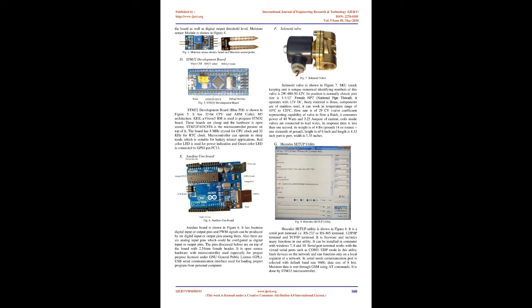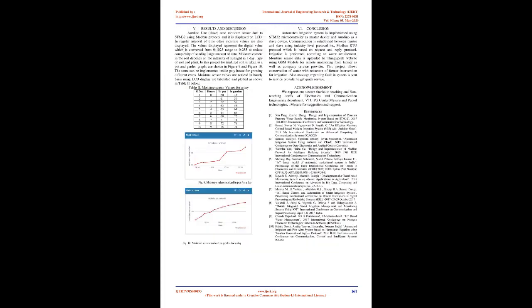The solenoid valve, shown in Figure 7, has SKU number 2W400-50-12V. Its position is normally closed, port size is 1-1/2 inch female NPT (national pipe thread), it operates with 12VDC, the body material is brass, and components are stainless steel. It can work in a temperature range of 10°C to 120°C. Flow rate is 29 CV. It consumes power of 40W and 3.25A of current. Coils inside the valve are connected to lead wires. Response time is less than 1 second. Its weight is 4 pounds 14 ounces, height is 6 inches, length is 4.33 inches port to port, and width is 3.35 inches.